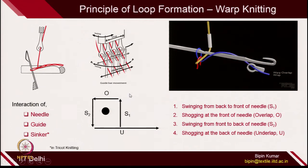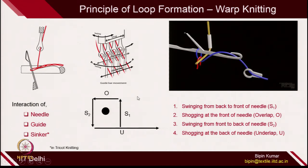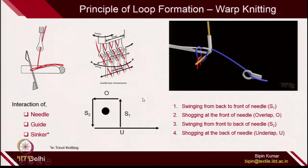The old loop is knocked out from the surface of the needle and the loop is formed. This is important in loop formation in warp knitting. All the engineering designs of warp knitted structures are generated if you understand the importance of overlap and underlap as well as swinging motion. We have given sufficient time to understanding the overlap and underlap in warp knitting technologies.